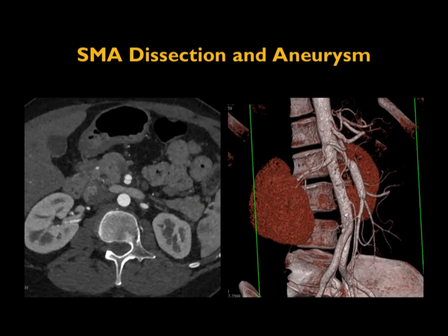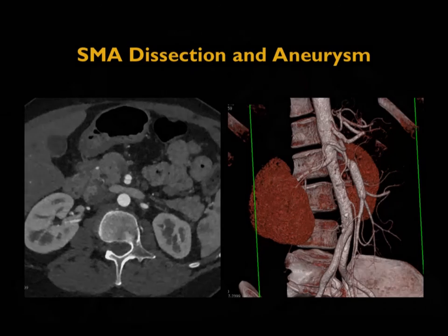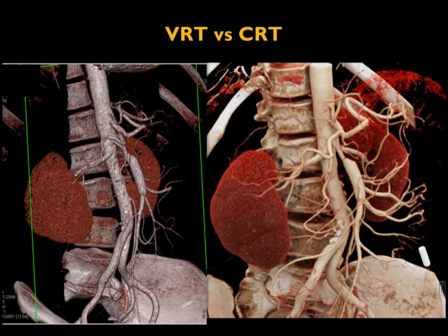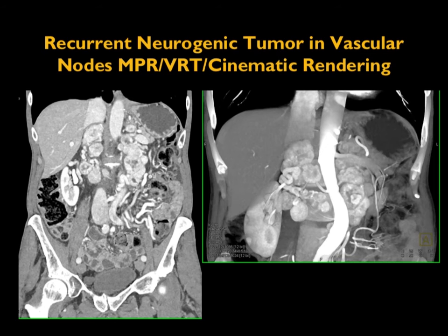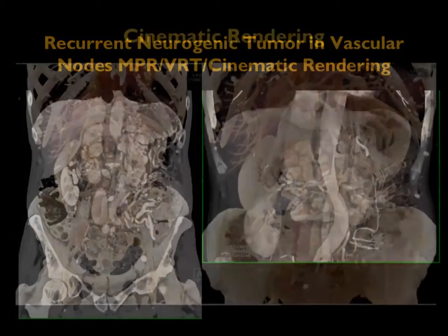We have an article in press coming out around the time of this lecture, which talks about this illumination — the ability to create a next-generation volume rendering with environmental light mapping and the use of textures and brightness to improve quality. Showing this case of a dissection of the patient's SMA, you see volume rendering on the left and cinematic rendering on the right — the vessels, details, and sharpness seem better in cinematic.